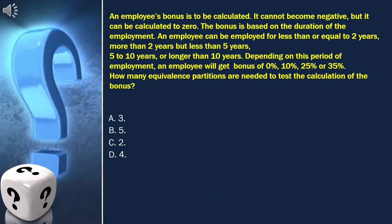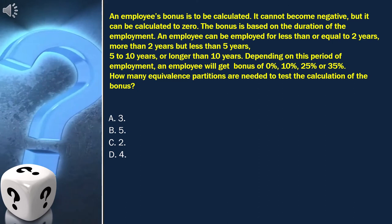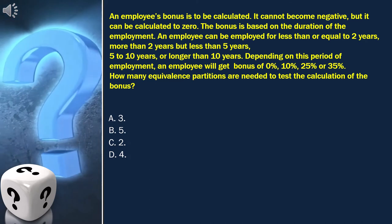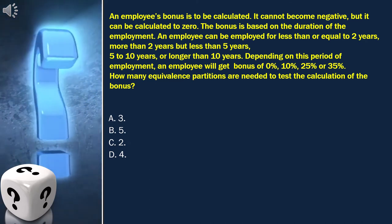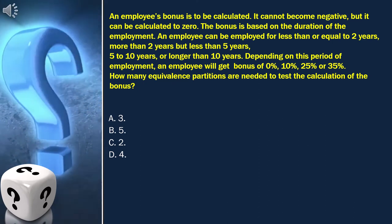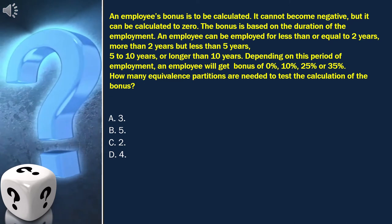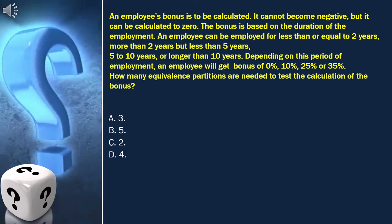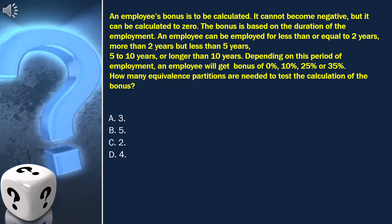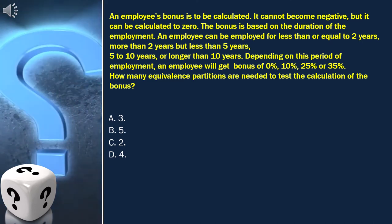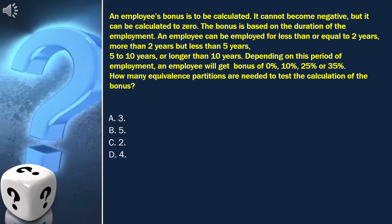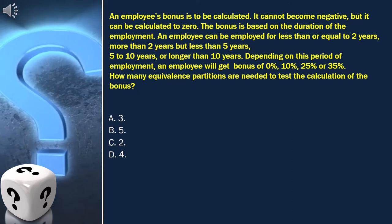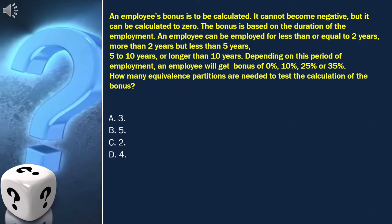The question is: an employee's bonus is to be calculated. It cannot become negative, but it can be calculated to zero. The bonus is based on the duration of employment. An employee can be employed for less than or equal to two years, more than two years but less than five years, five to ten years, or longer than ten years. Depending on this period, an employee will get a bonus of zero percent, ten percent, twenty-five percent, or thirty-five percent. How many equivalence partitions are needed to test the calculation of the bonus?